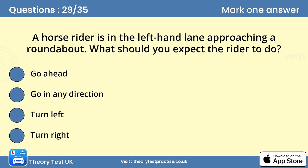Question 29. A horse rider is in the left-hand lane approaching a roundabout. What should you expect the rider to do? The answer is B: Go in any direction. Horses and their riders will move more slowly than other road users. They might not have time to cut across heavy traffic to take up a position in the offside lane when they're turning right, and it could also be hazardous for them to do so. Therefore, a horse and rider may approach a roundabout in the left-hand lane, even though they're turning right.